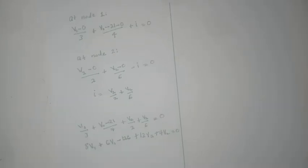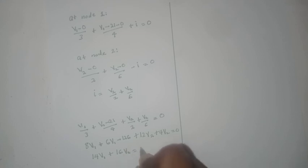And then we write this as 14v1 plus 16v2 equals 126, and we can make this our first equation.